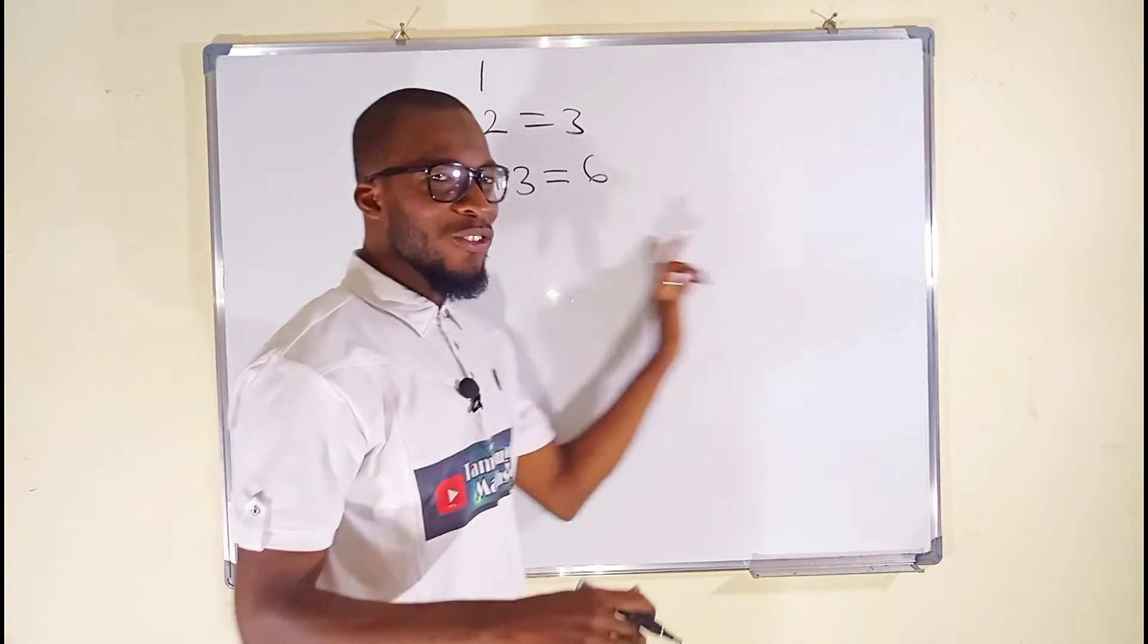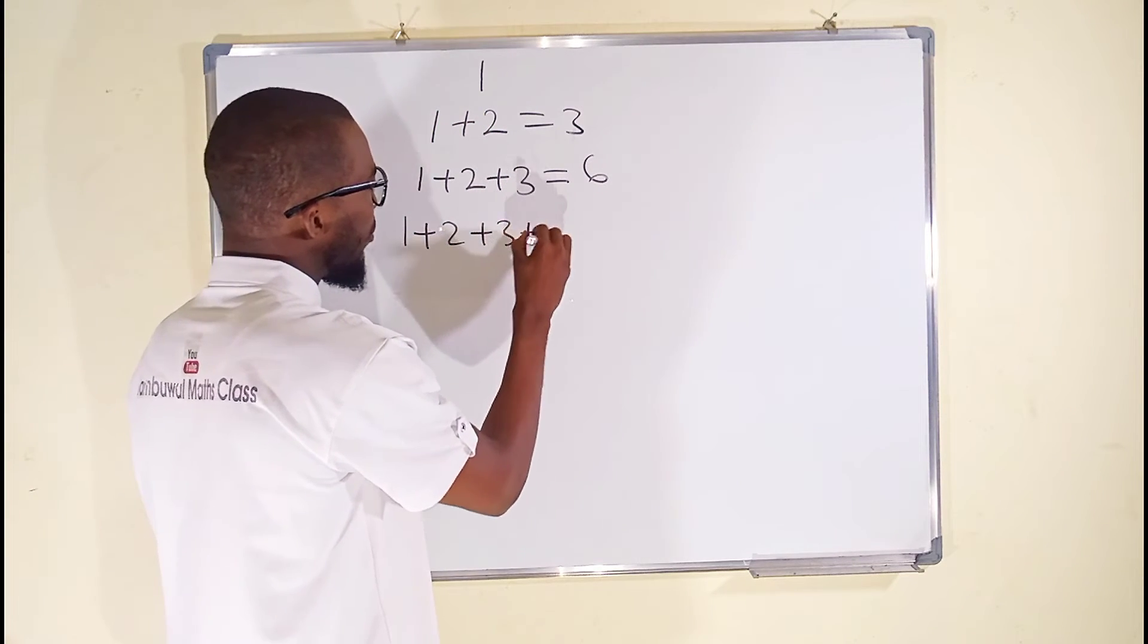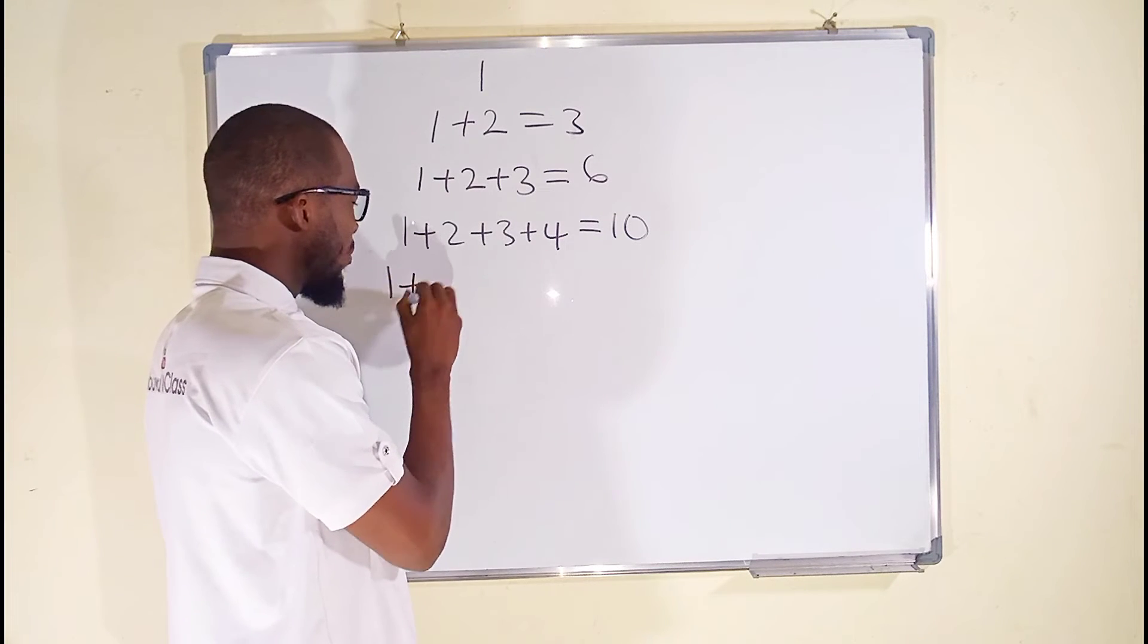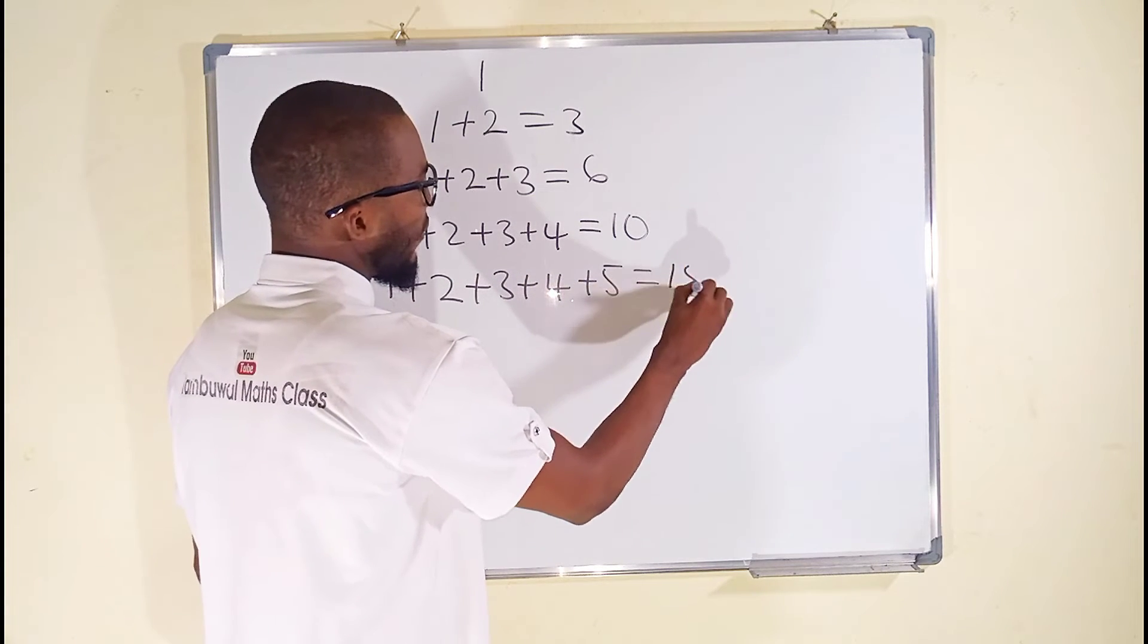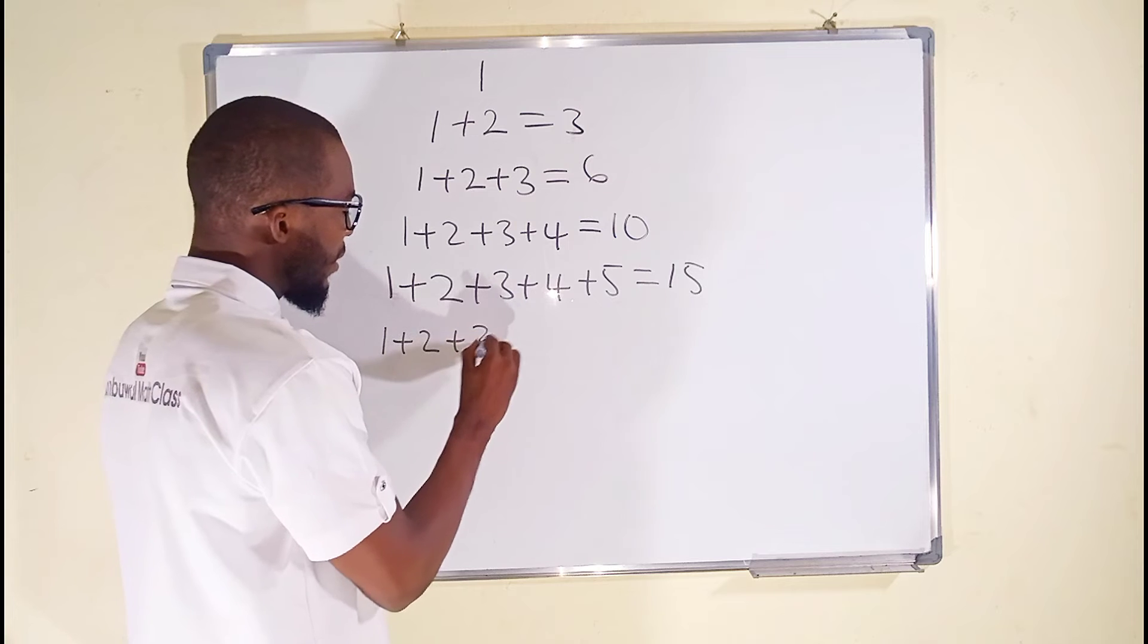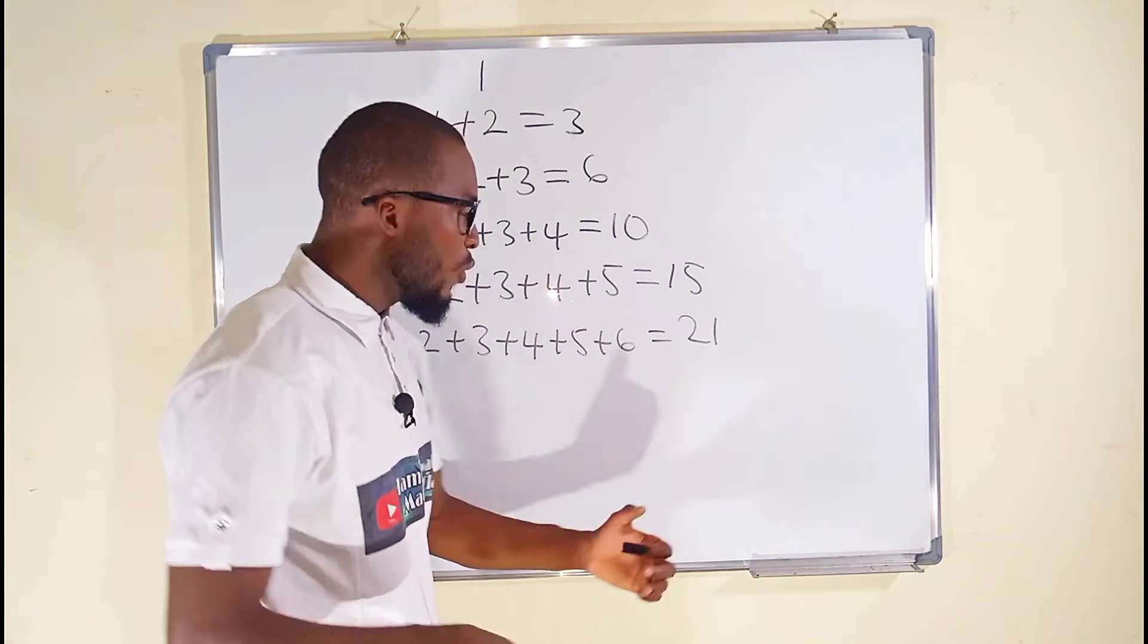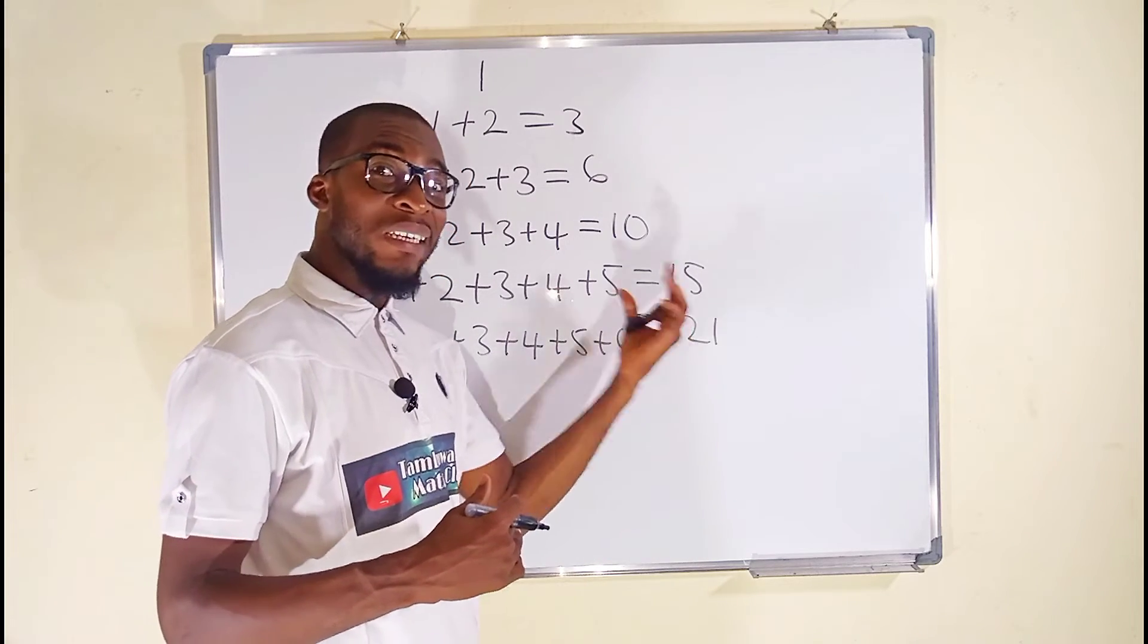Our main target is to add all the natural numbers together. Next one, we have 1 + 2 + 3 + 4 and this equals 10. Let's keep on adding: 1 + 2 + 3 + 4 + 5 and this is equal to 15. Let's add one more. We have 1 + 2 + 3 + 4 + 5 + 6 and this is equal to 21. Can you see, the more you add these numbers in the ascending order, the more the results keep on increasing positively.